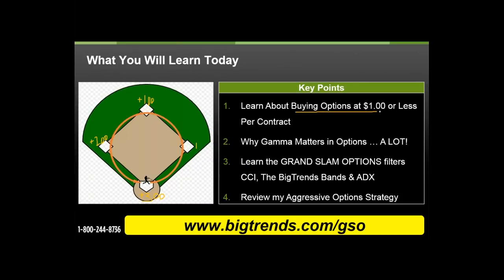We're talking about option strategies where one contract controlling 100 shares can be bought for just $1 or less — that's $100 to control 100 shares. We will never pay more than a buck on the option price. Sometimes we'll pay as little as $0.50 or $0.75, getting in for 50 or 75 bucks to control 100 shares of stocks like Microsoft, Apple, or MasterCard. These are typically out-of-the-money options, which makes it a more aggressive strategy, so getting your timing right is everything.